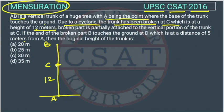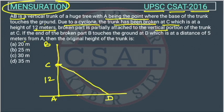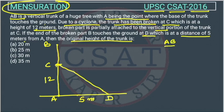The trunk broke at C. The end of the broken part B touches the ground at D, which is 5 meters from A. So AD is 5 meters and AC is 12 meters. We have to find AB, which equals AC plus CD.